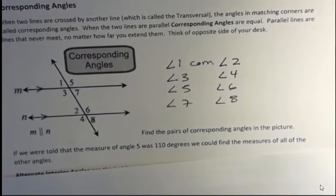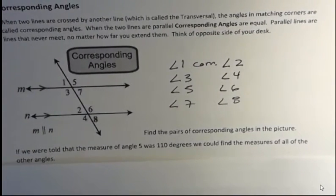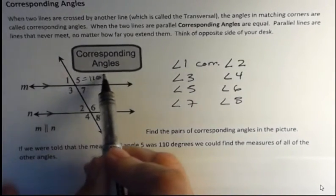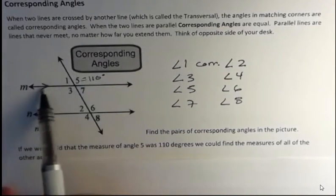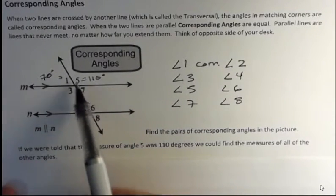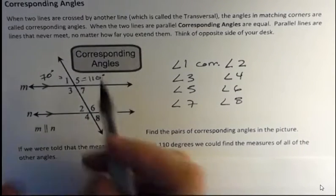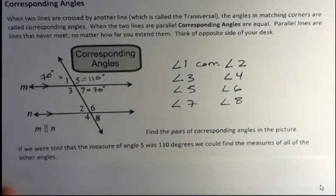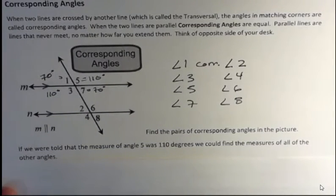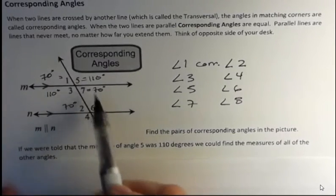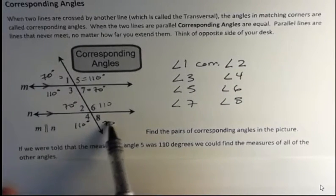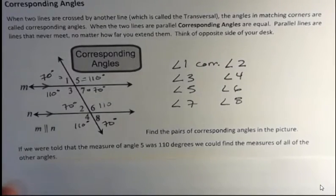If you were told that the measure of angle five was 110 degrees, we could find the measures of all the other angles. If five is 110, then angle one would be 70 because they're supplementary — this is a straight line. Five is also supplementary to seven, or you could say one and seven are vertical angles, so seven is also 70. Five is a vertical angle to three, so three is 110. Then using corresponding angles: one corresponds to two, so two is 70; five corresponds to six, so six is 110; three corresponds to four, so four is 110; and seven corresponds to eight, so eight is 70. Once you know the angle relationships, a little bit of information can take you a long way.